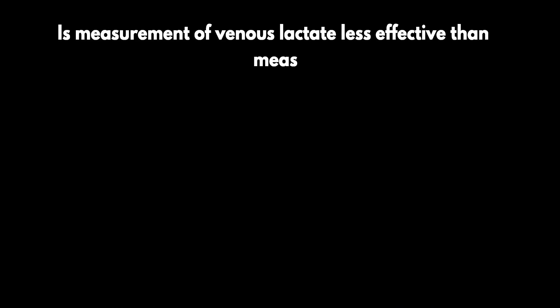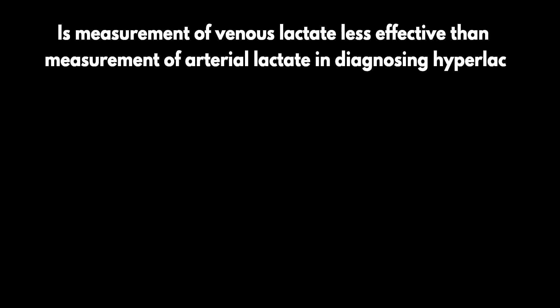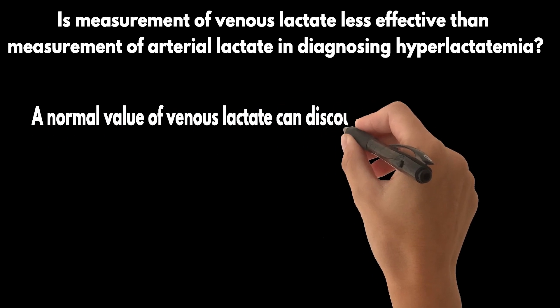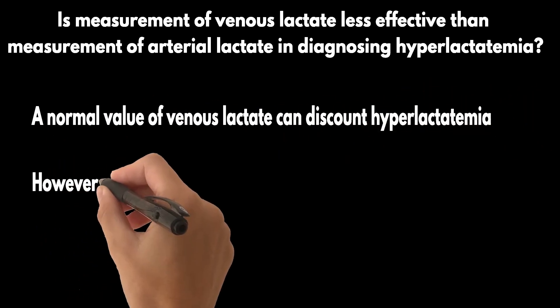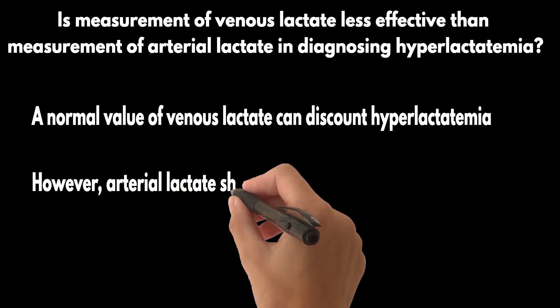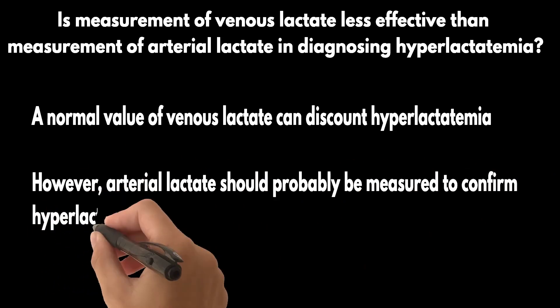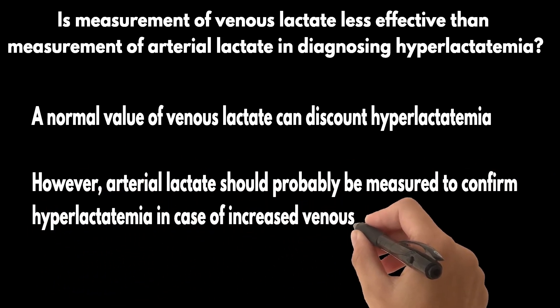Is measurement of venous lactate less effective than measurement of arterial lactate in diagnosing hyperlactatemia? A normal value of venous lactate can discount hyperlactatemia; however, arterial lactate should probably be measured to confirm hyperlactatemia in the case of increased venous lactate.